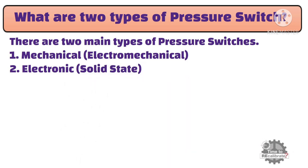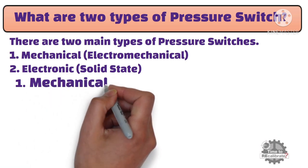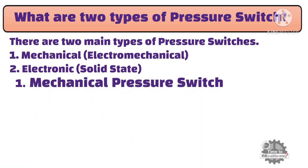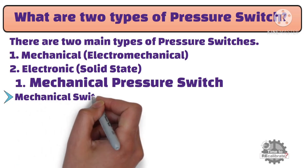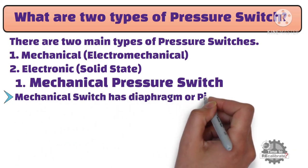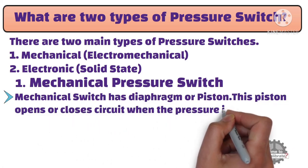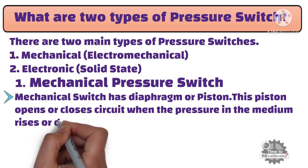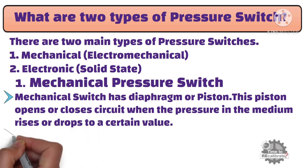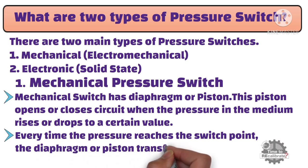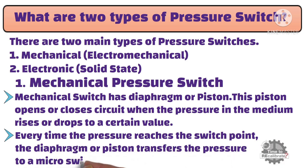Let's first understand what is a mechanical pressure switch. A mechanical switch has a diaphragm or piston. This piston opens or closes the circuit when the pressure in the medium rises or drops to a certain value. Every time the pressure reaches the switch point, the diaphragm or piston transfers the pressure to a micro switch.